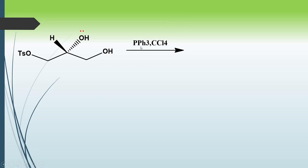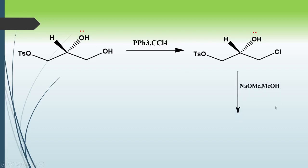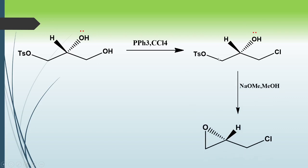Then we use triphenylphosphine and CCl₄, which converts the OH into a Cl group. Next, in the presence of sodium ethoxide and MeOH, there is removal of the OTs group — OTs leaves the molecule and we get the S-epichlorohydrin via intramolecular attack forming the epoxide. This is the S-epichlorohydrin, and this completes the mechanism using glyceraldehyde.